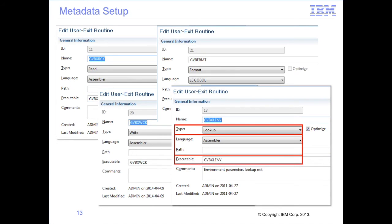Using exits requires that they first be described in the user exit routine screen within the workbench. The name can be anything desired. The type can be either read, lookup, write, or format. The language and path are for documentation only. The executable must match the name of the load module stored within an accessible load library for either GBV-MR95 or GBV-MR88. The optimizable flag is only applicable for lookup exits.